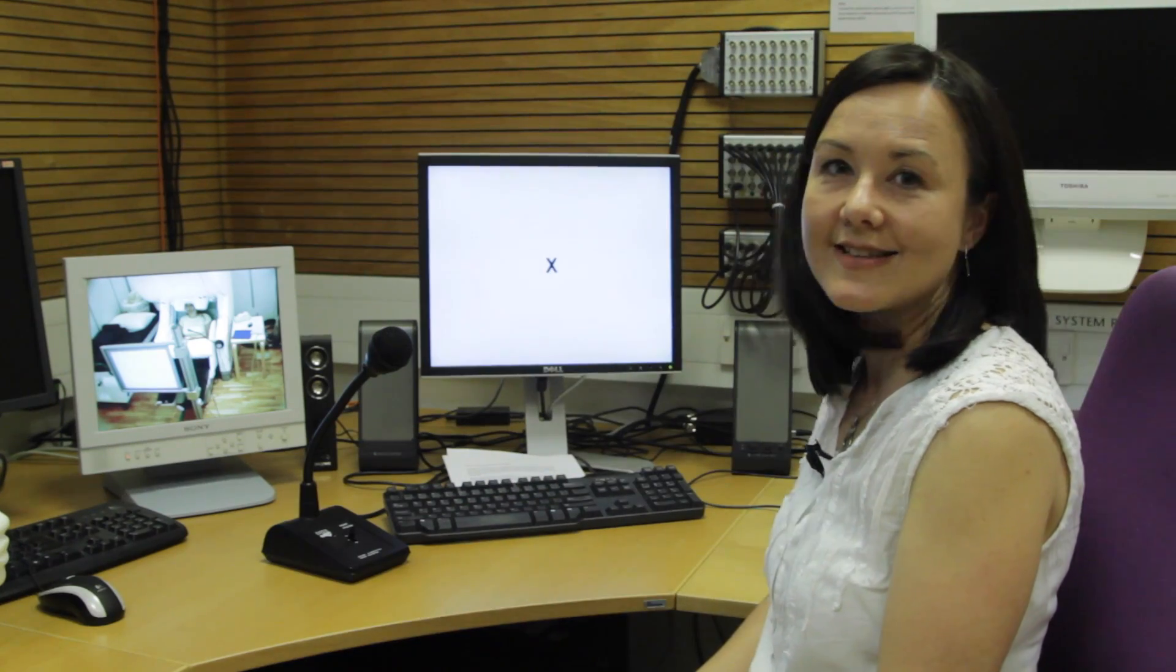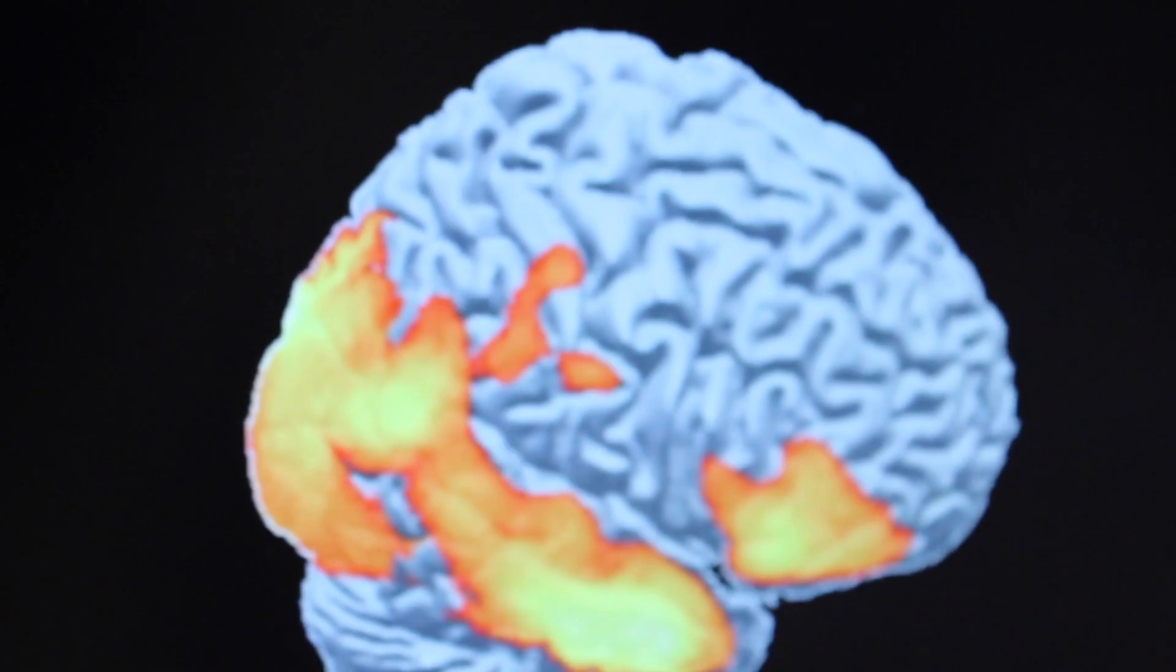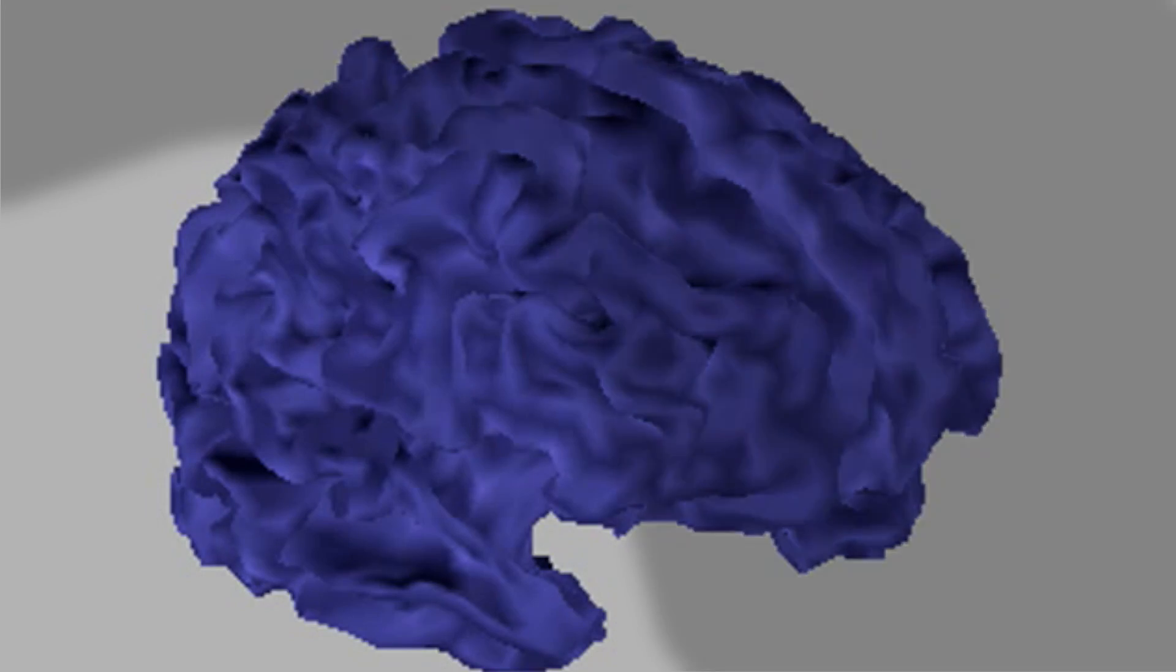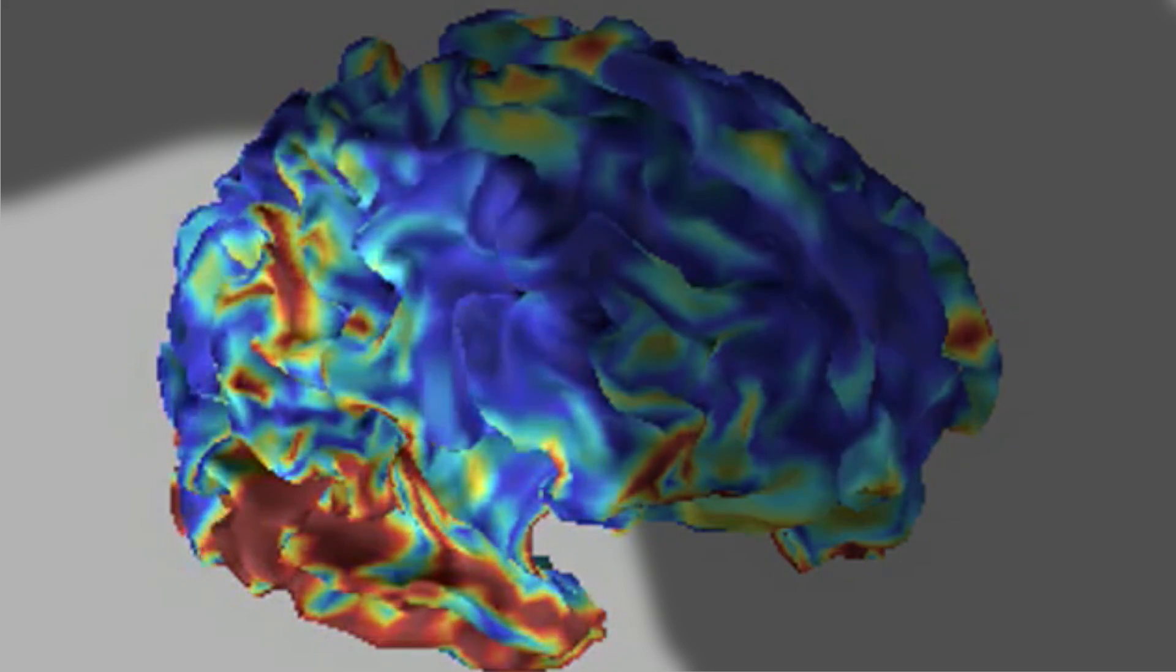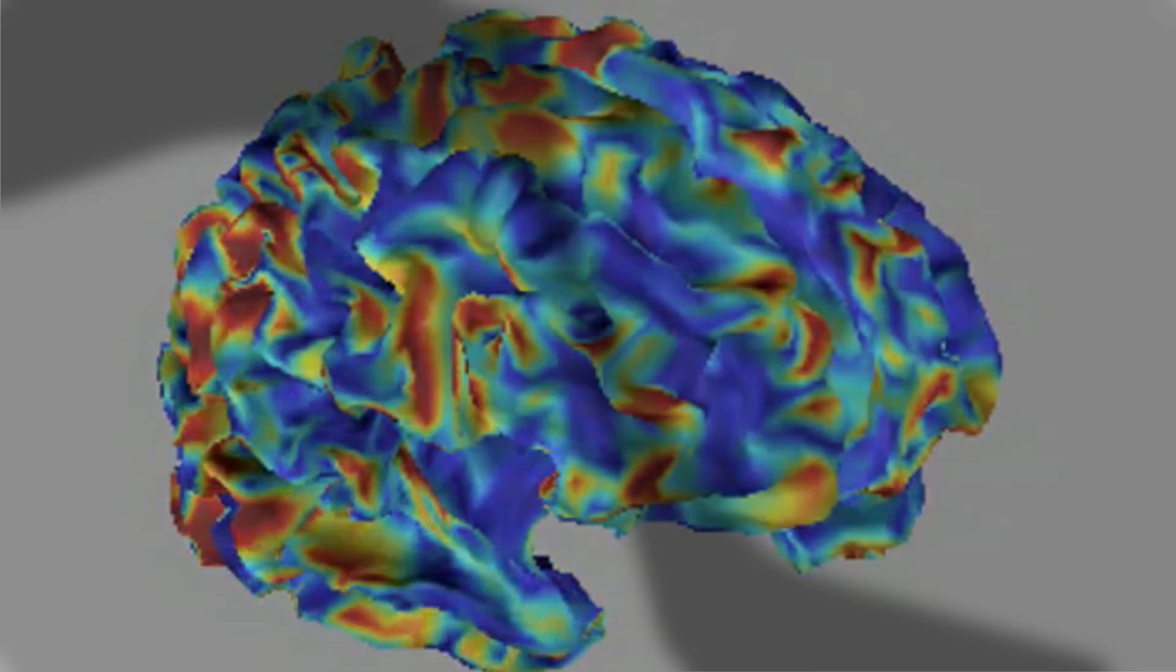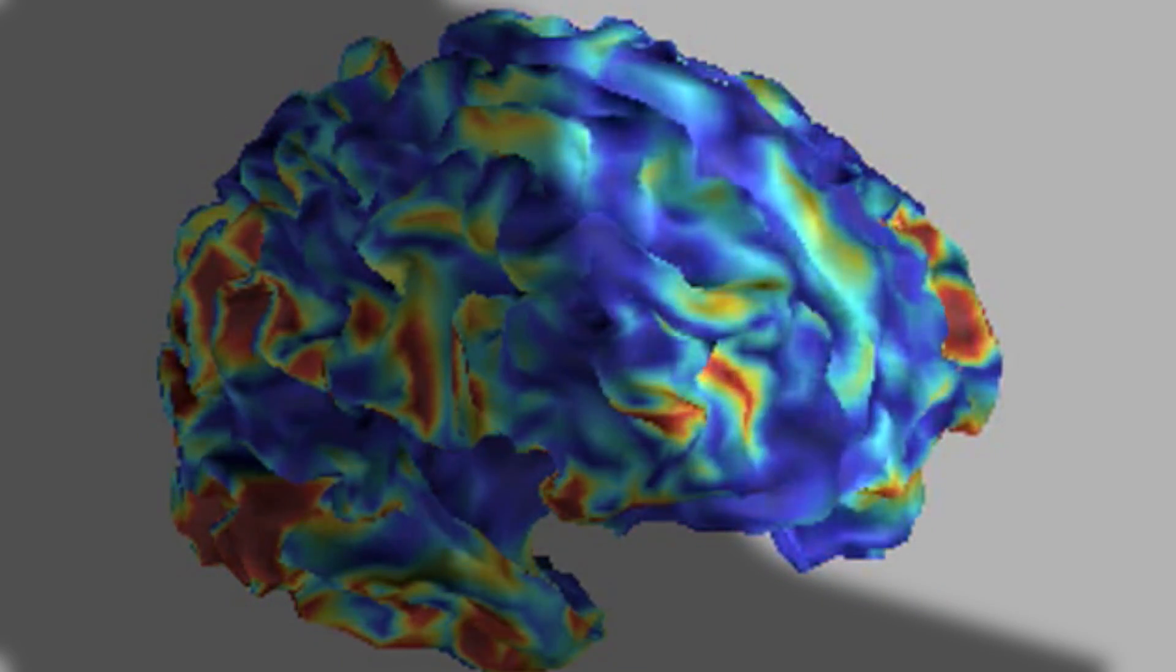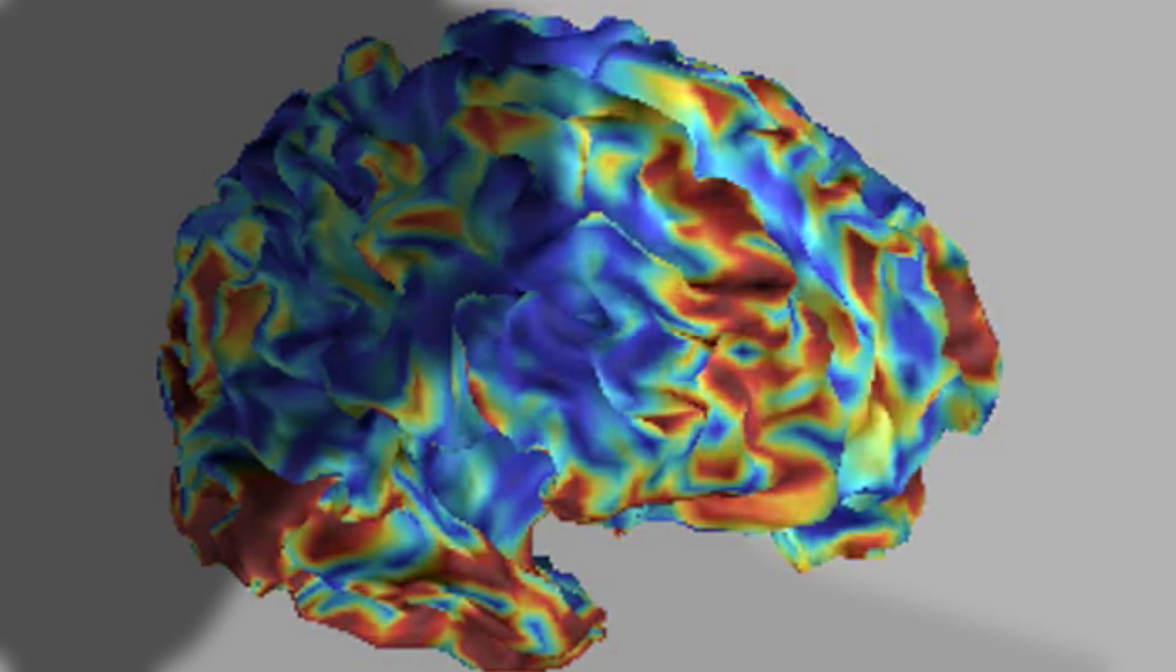When we look at results from the healthy controls, particularly focusing on successful no-go trials, we can see occipital cortical activity, which is not surprising because this is a visual task. But we can also see this anterior prefrontal cortical activity and temporal lobe activity.